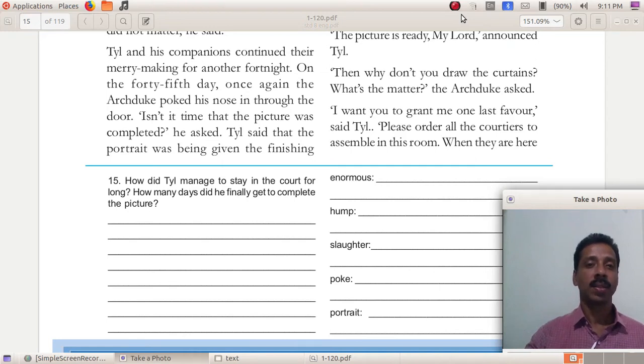Hi students, welcome to English class. Coming to the last part of the story, the mysterious picture. In the last parts we saw a painter appointed as the court painter of the Archduke of Battenberg. He was given a task to draw the portrait of the Archduke and the courtiers, but there was a difficulty that Till faced.